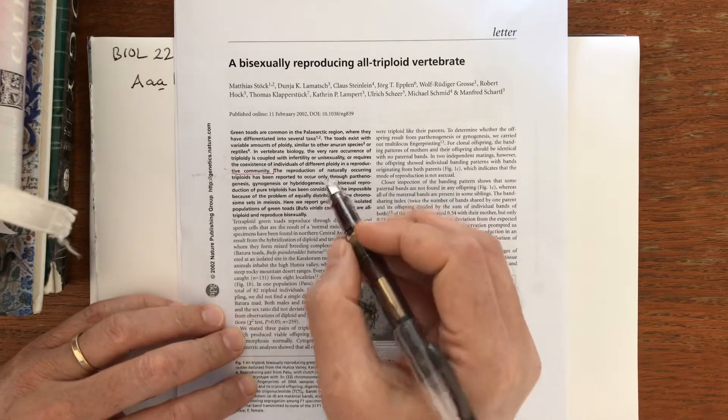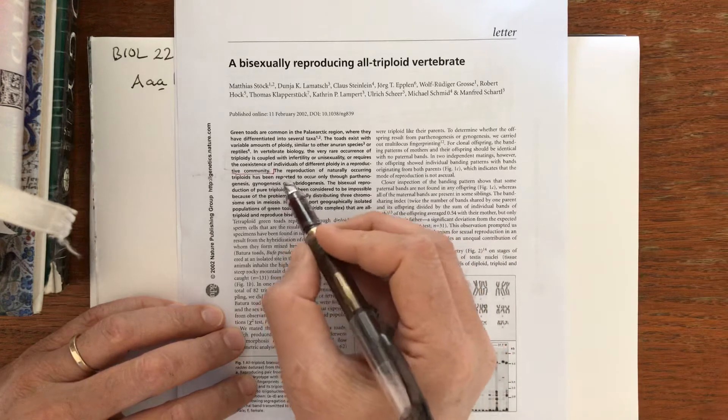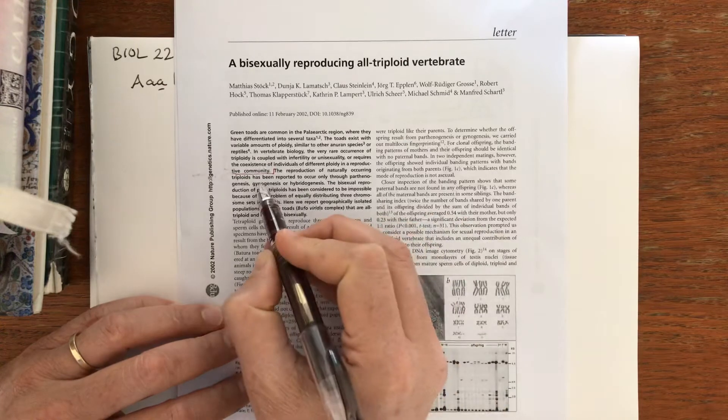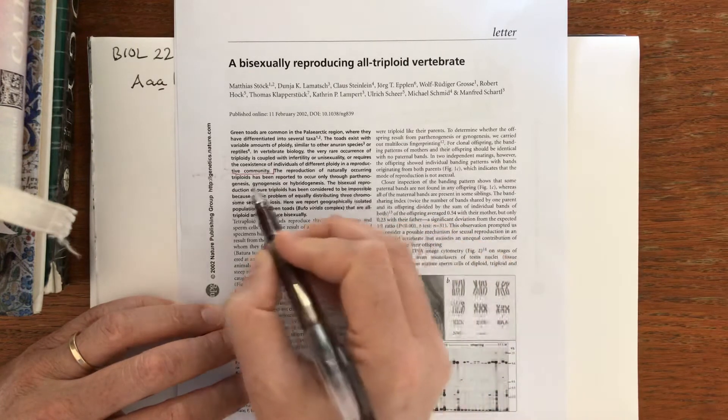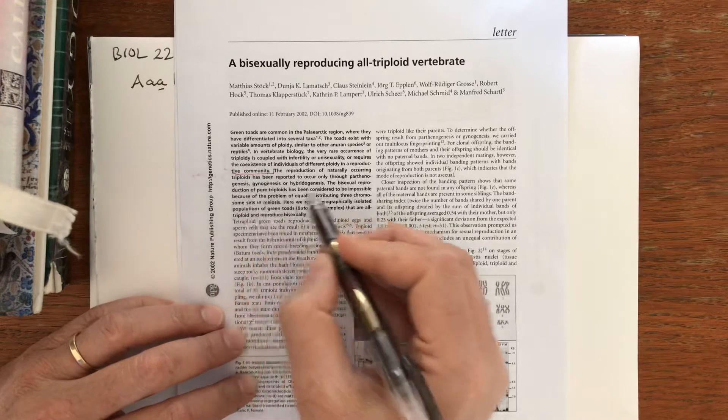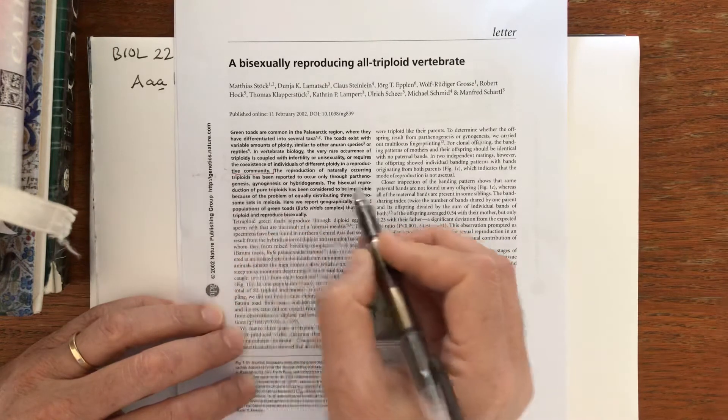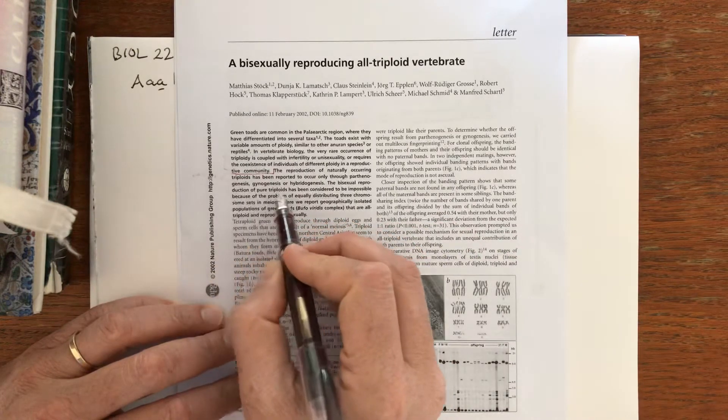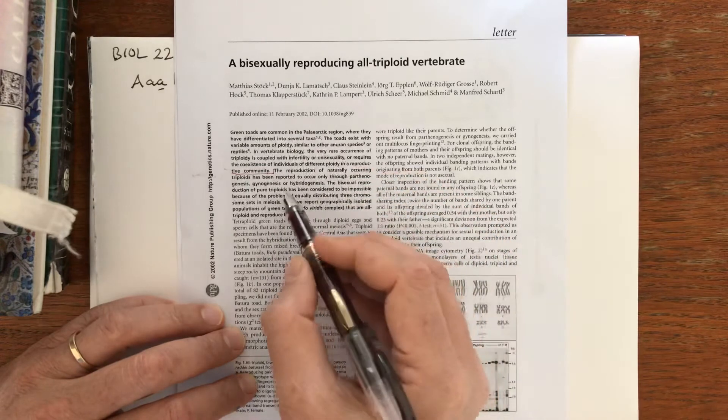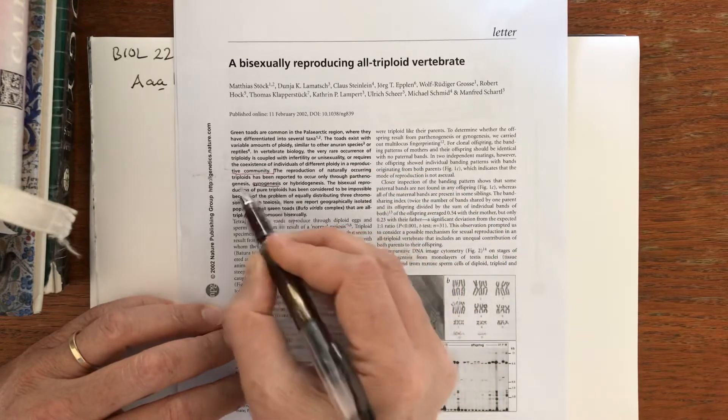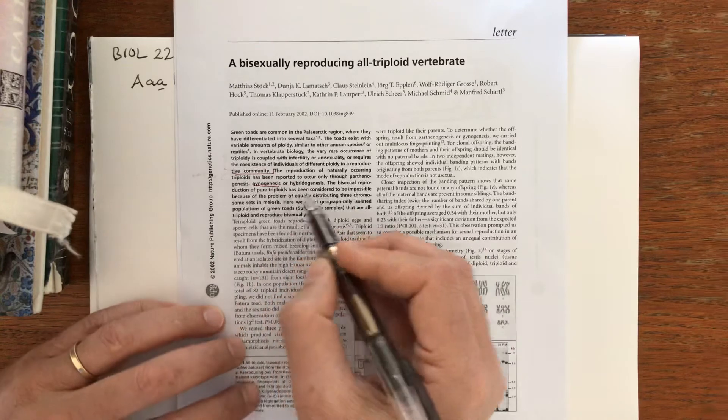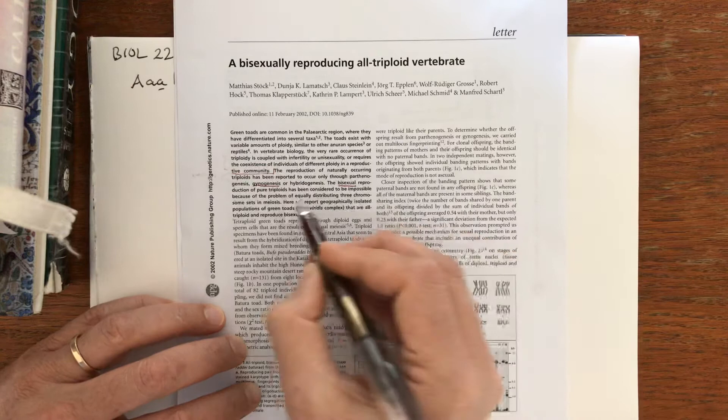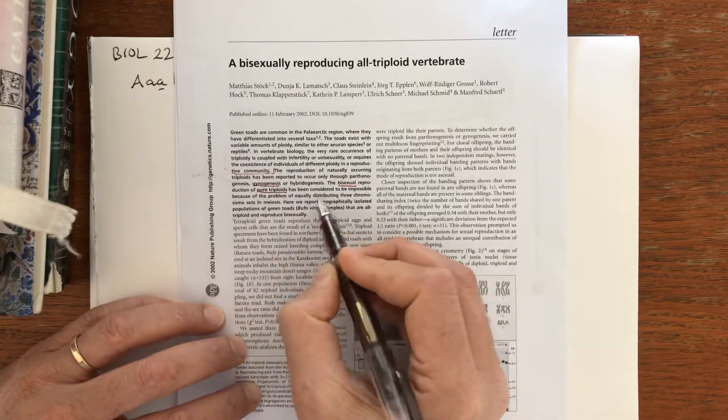The reproduction of naturally occurring triploids has been reported to occur only through parthenogenesis - that's reproduction without males in a sexually reproducing species - gynogenesis, or hybridogenesis, which is the triploid with diploid. I'm not quite sure what the difference between parthenogenesis and gynogenesis is.